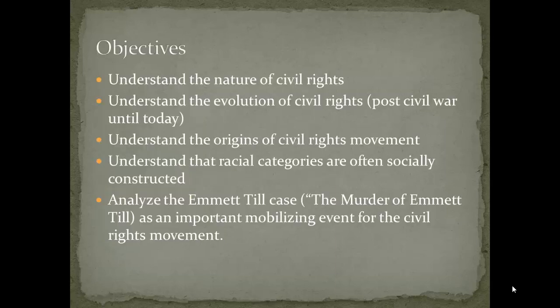Civil Rights, Part 2. In this particular section of the course, we are going to look at the nature of civil rights. We want to examine how those civil rights evolved over time — really, from the period right after the end of the Civil War, 1865 to 1870, and a little bit beyond until today. This will set us up to better understand the origins of the civil rights movement. We are going to look at racial categories and examine the extent to which they are socially constructed, and we are going to analyze the Emmett Till case. The documentary is called The Murder of Emmett Till, and you are assigned to view it today.